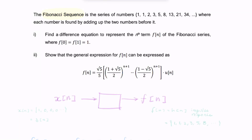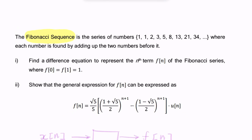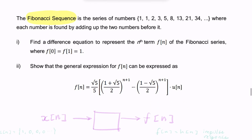In this question, we're told about something called the Fibonacci sequence, and we're asked a number of questions about this discrete time system that will likely involve the Z-transform. We're told that the Fibonacci sequence is found by adding the two numbers preceding the current output. For example, 3 equals 1 plus 2, 13 equals 5 plus 8, etc. So each number in the Fibonacci sequence is the sum of the two previous numbers.